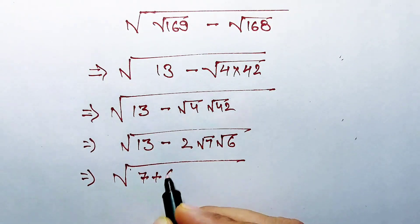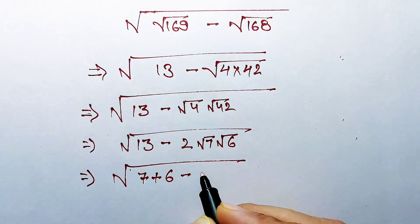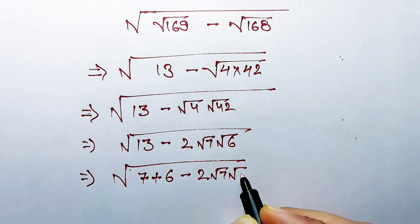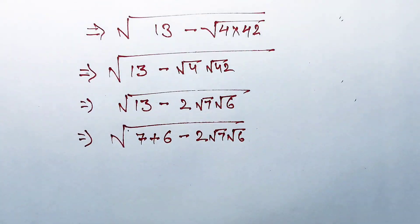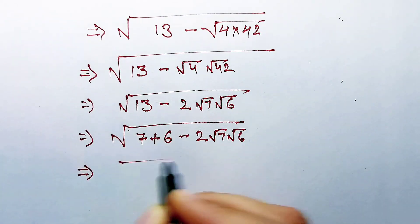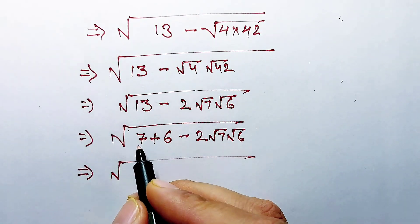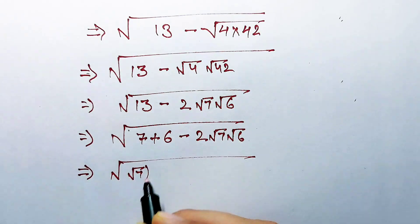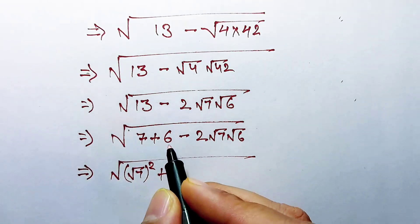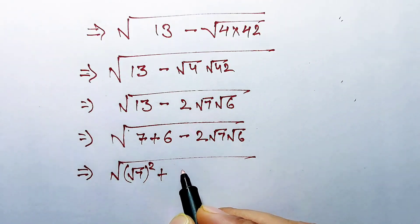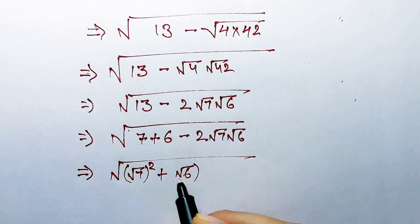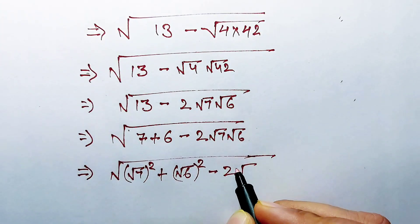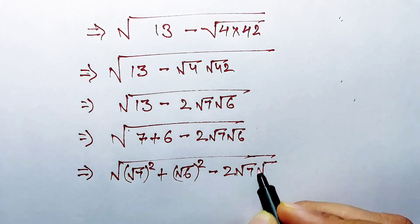Further solving, 13 can be written as 7 plus 6, minus 2 multiplying square root of 7 multiplying square root of 6. Now 7 can be written as square root of 7 squared, and 6 can be written as square root of 6 squared, minus 2 multiplying square root of 7 and square root of 6.